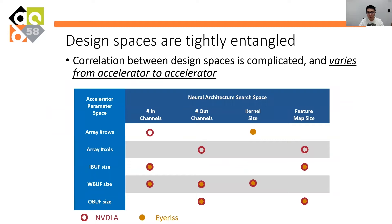As the table shows, the correlation between neural and accelerator architecture is complicated and varies from accelerator to accelerator. For instance, the tiled input channels should be multiples of the number of nodes of the compute array in NVDA, while the number of nodes is related to the kernel size in IRIS. A perfectly matched neural architecture, accelerator architecture, and mapping strategy will improve the utilization of the compute array and on-chip memory, maximizing efficiency and performance.